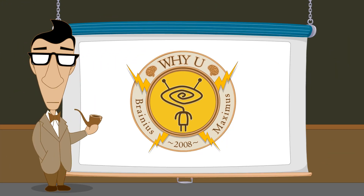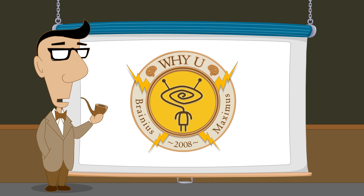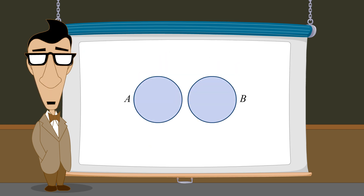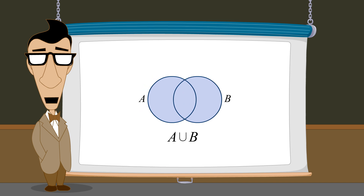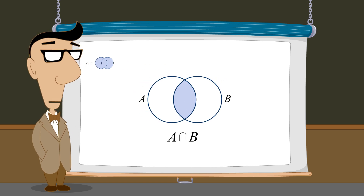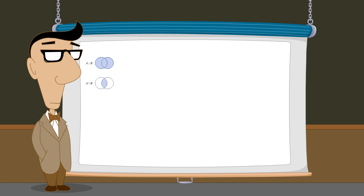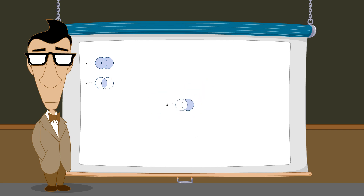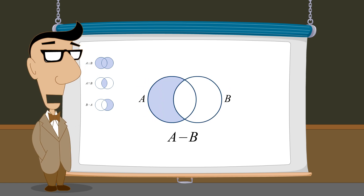Hello, I'm Professor Von Schmohawk and welcome to Why U. We have discussed several operations which create new sets by combining sets in various ways. The union of sets contains all elements which are members of either set. The intersection of sets contains only elements which are members of both sets. The relative complement of A in B contains all elements which are members of B but not A, and the relative complement of B in A contains all elements which are members of A but not B.